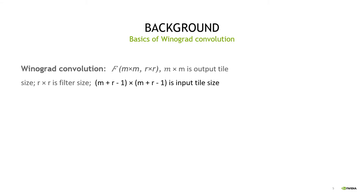Another approach to accelerate convolution computing is to reduce the computation complexity. Recent work on Winograd Convolution can reduce the computation complexity a lot, making convolution computing faster. We denote the 2D tile Winograd Convolution as F(M×M, R×R), where M×M is the output tile size, R×R is the filter size, and the input tile size is (M+R−1)×(M+R−1).